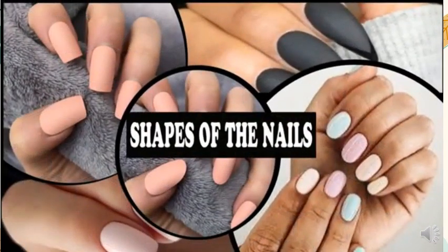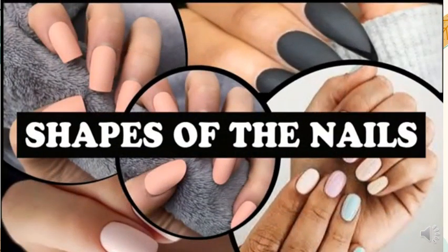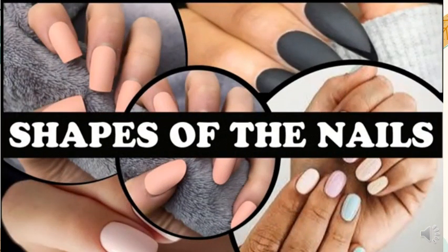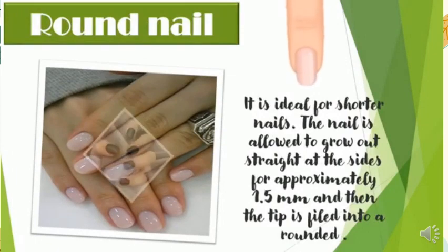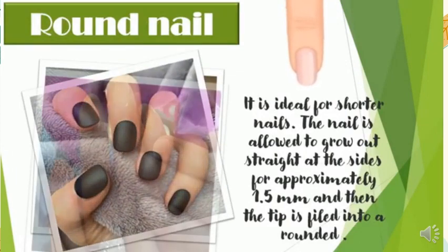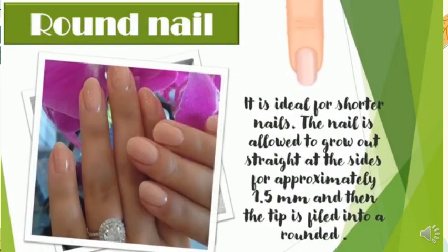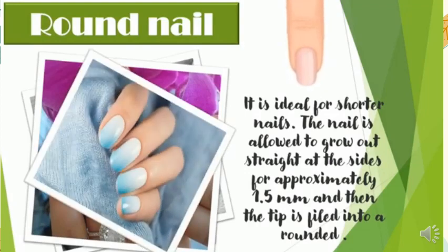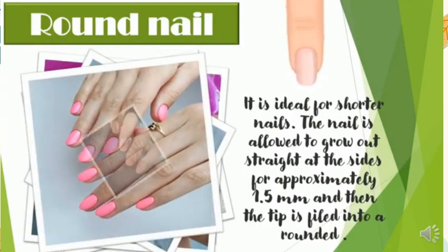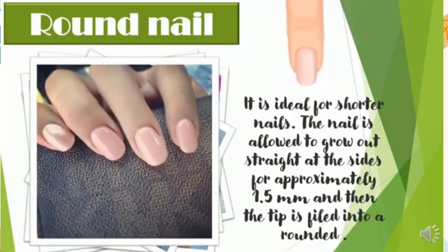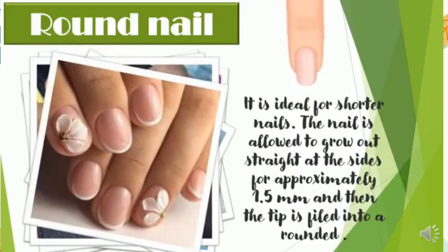Nails have different shapes. Here are some of the common shapes of the nails. Round nail — it is ideal for shorter nails. The nail is allowed to grow out straight at the sides for approximately 1.5 mm, and then the tip is filed into a rounded shape.